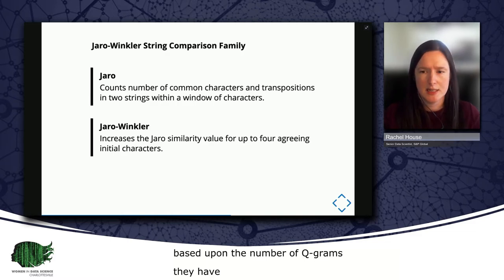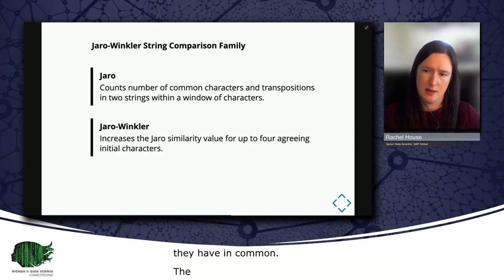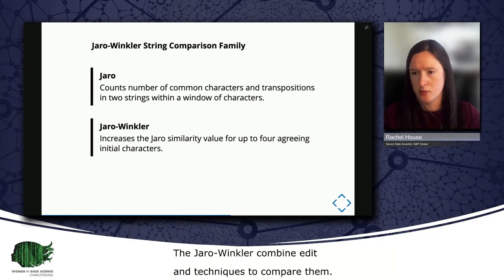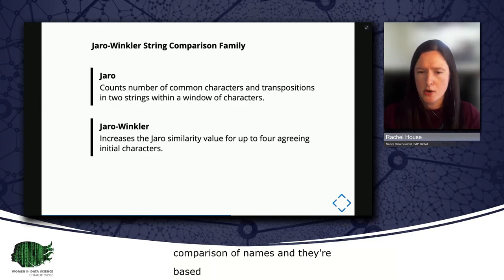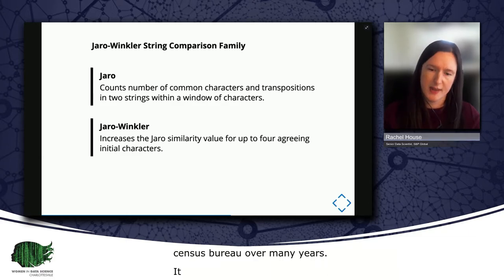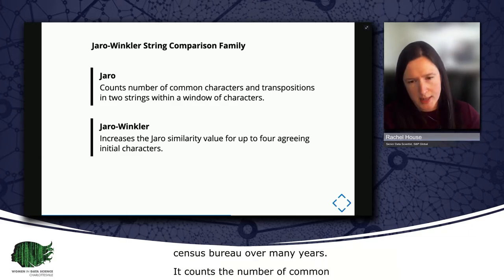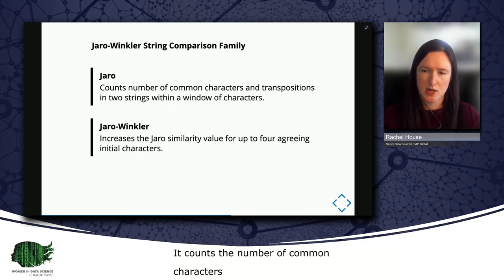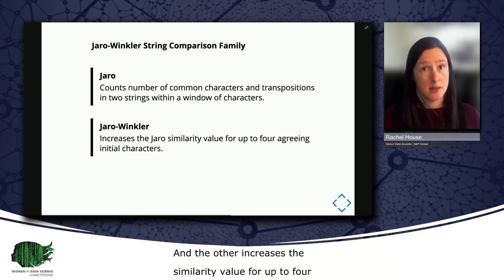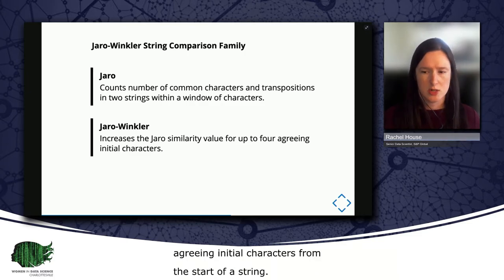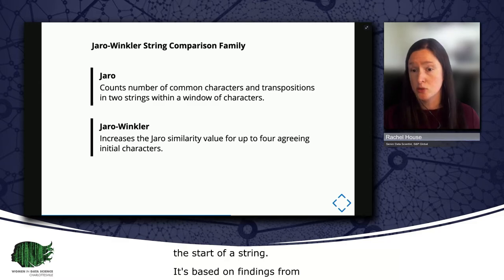The Jaro-Winkler string comparison family combine both edit distance and Q-gram-based techniques to compare strings. And these comparisons are designed specifically for the comparison of names. And they're based on data matching work that was conducted at the US Census Bureau over many years. The Jaro function counts the number of common characters and transpositions in two strings within a window of characters. And the Jaro-Winkler variation increases the Jaro similarity value for up to four agreeing initial characters from the start of string. And this is based on findings from the US Census Bureau as well as other empirical studies that have shown that fewer errors appear at the beginning of names as opposed to the end.